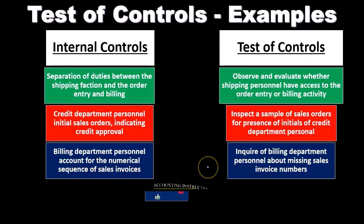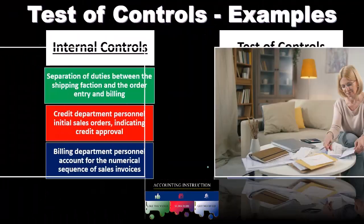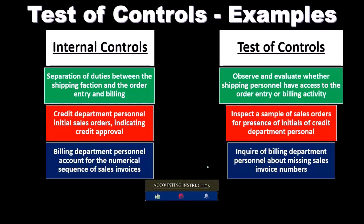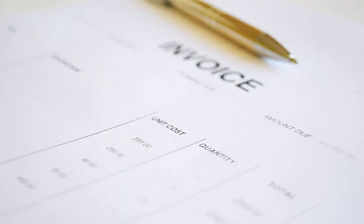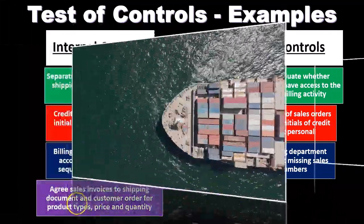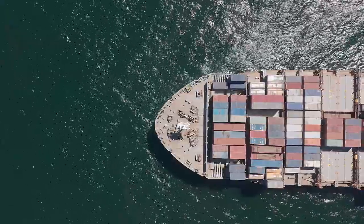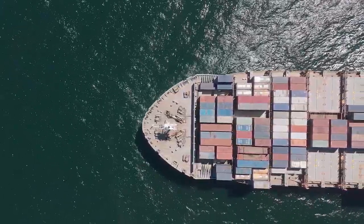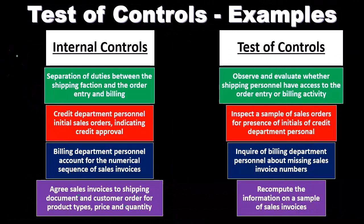Another example: billing department personnel account for the numerical sequence of sales invoices. We can inquire of billing personnel about missing sales invoice numbers — if they have no idea what we're talking about, that's an indication they're not checking for missing invoice numbers. We can also agree the sales invoice to the shipping document and the customer order for product types, price, and quantity — three documents that should be tied together — and we can recompute the information on a sample of sales invoices to verify.